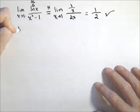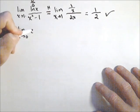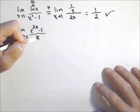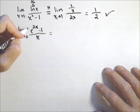Another example, let's take a look at this guy here. Limit as x goes to zero of e to the two x minus one all over x. So do we have a L'Hopital's rule? What do you think?